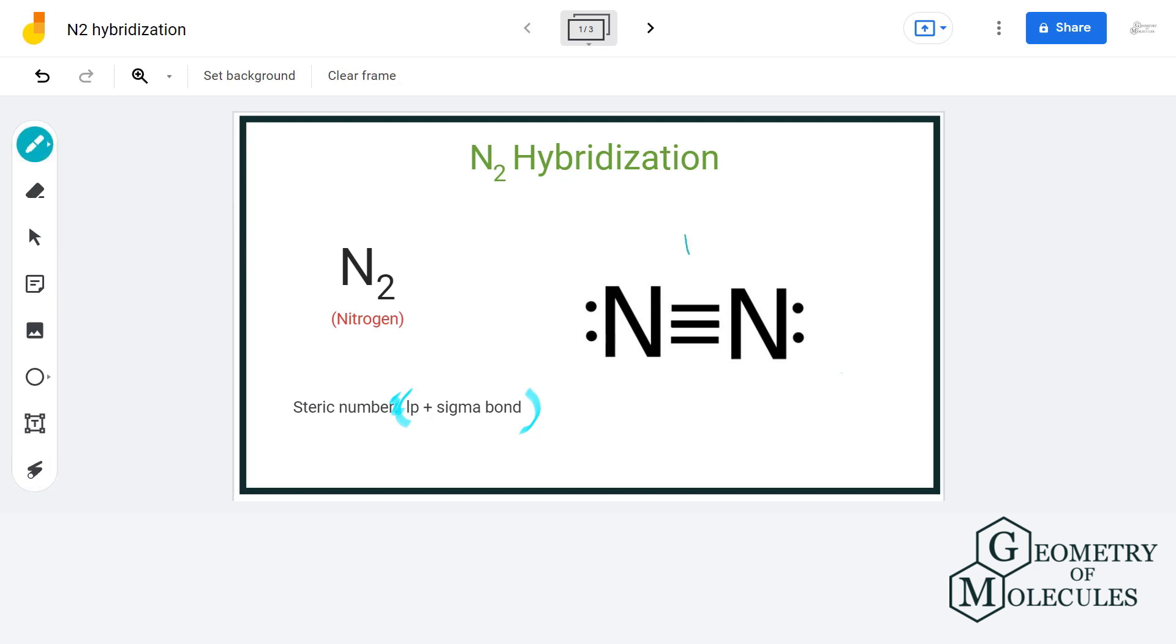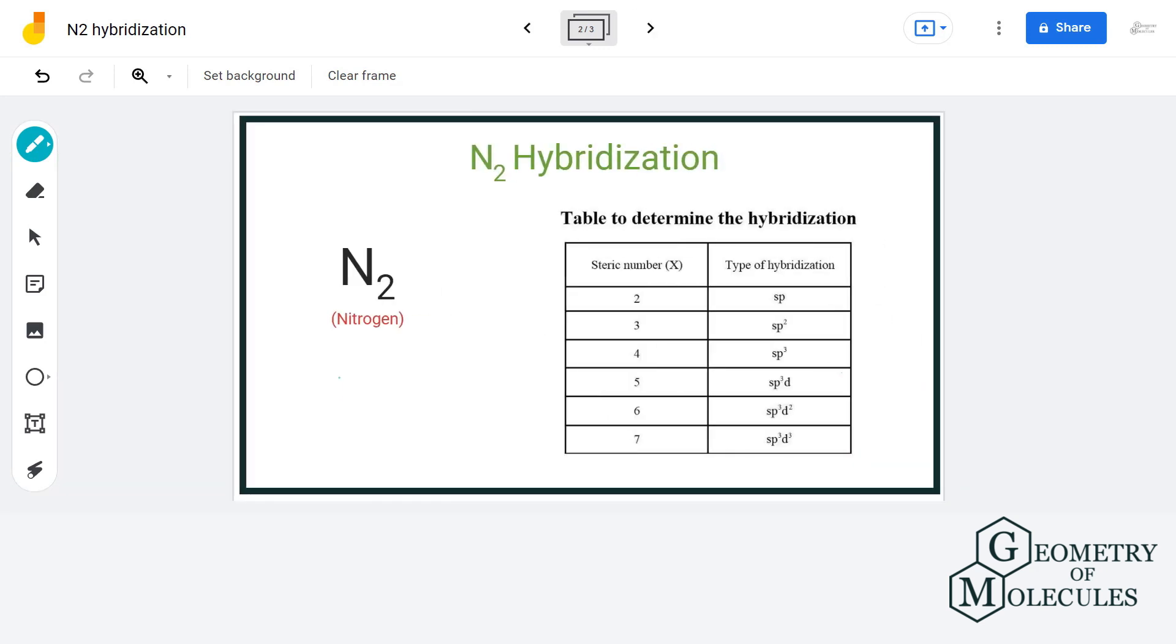Now, we know that a triple bond comprises one sigma bond. So let's add the two. We have one sigma bond plus one lone pair of electrons, which equals a steric number of 2. This corresponds to sp hybridization.